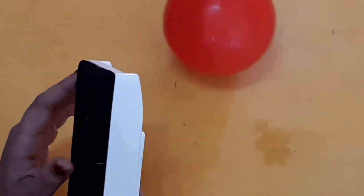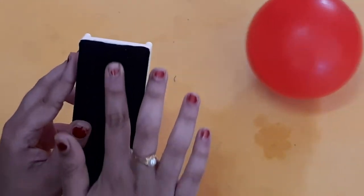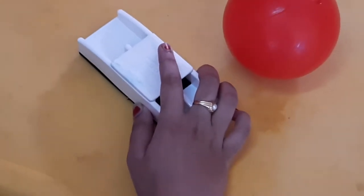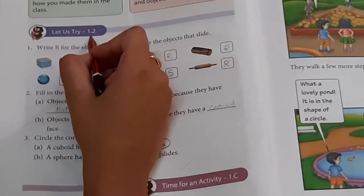Look at the duster. A duster has a flat face. That is why it slides.